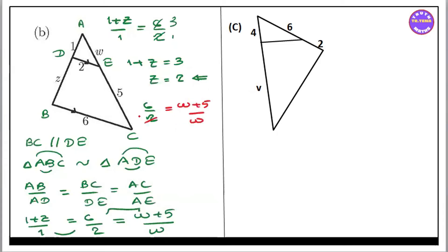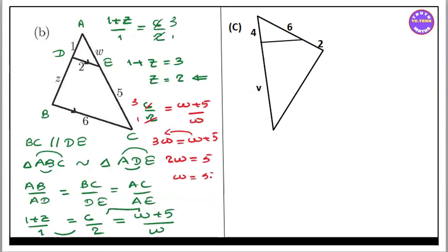So 6 by 2 equal to 3, and w plus 5 equal to 3w. Solving we get w equal to 2.5. So we need to get w equal to 2.5.